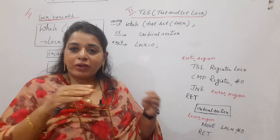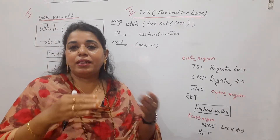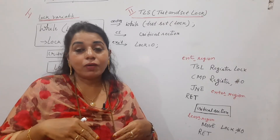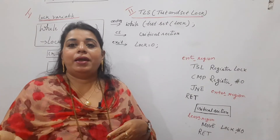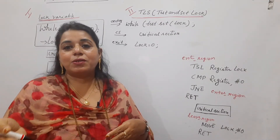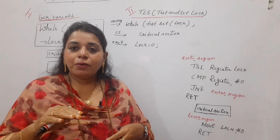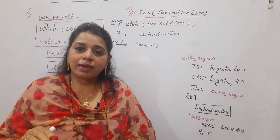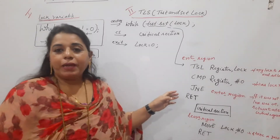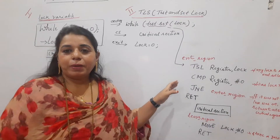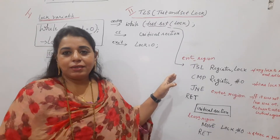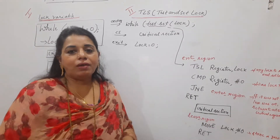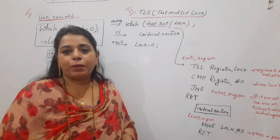In the previous solution, first testing and then before trying to lock, there were chances of preemption. Now what we will do is: test and set, let us do it together. Let me explain this particular Test and Set Lock solution to solve the critical section problem.